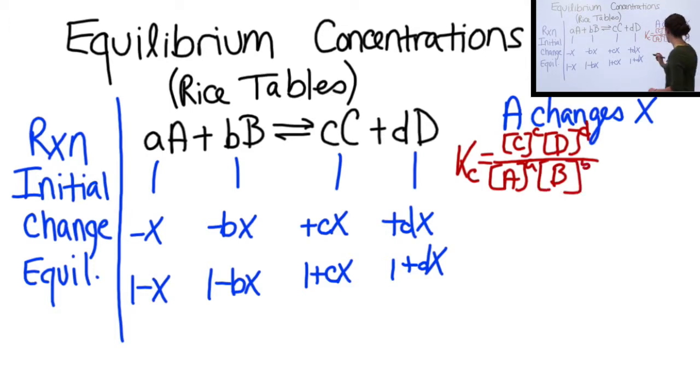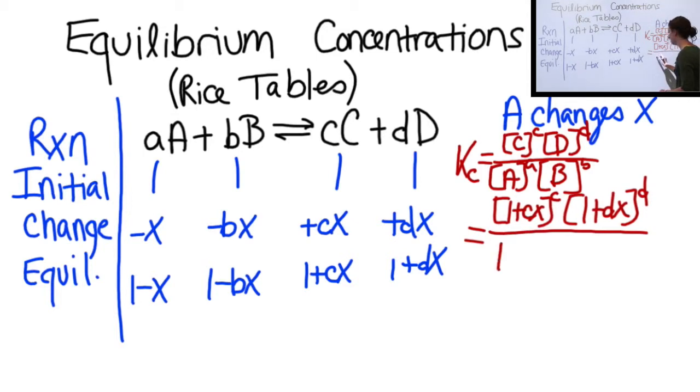So now we'll fill in. We get one plus cX to the power of little c times one plus dX to the power of little d over one minus X to the power of little a times one minus bX to the power of little b.